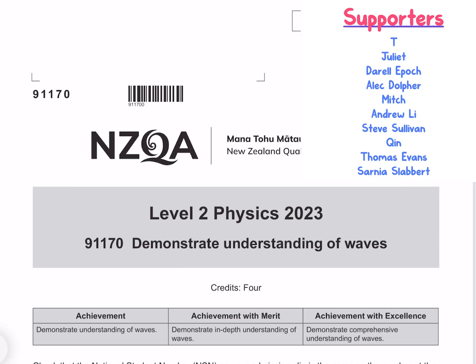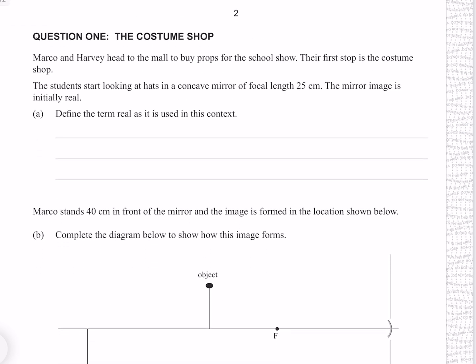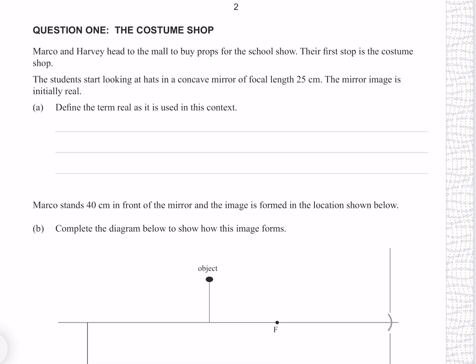In this video I'll be going through the 2023 Waves paper. Question 1. Marco and Harvey head to the mall to buy props for the school show. Their first stop is the costume shop.